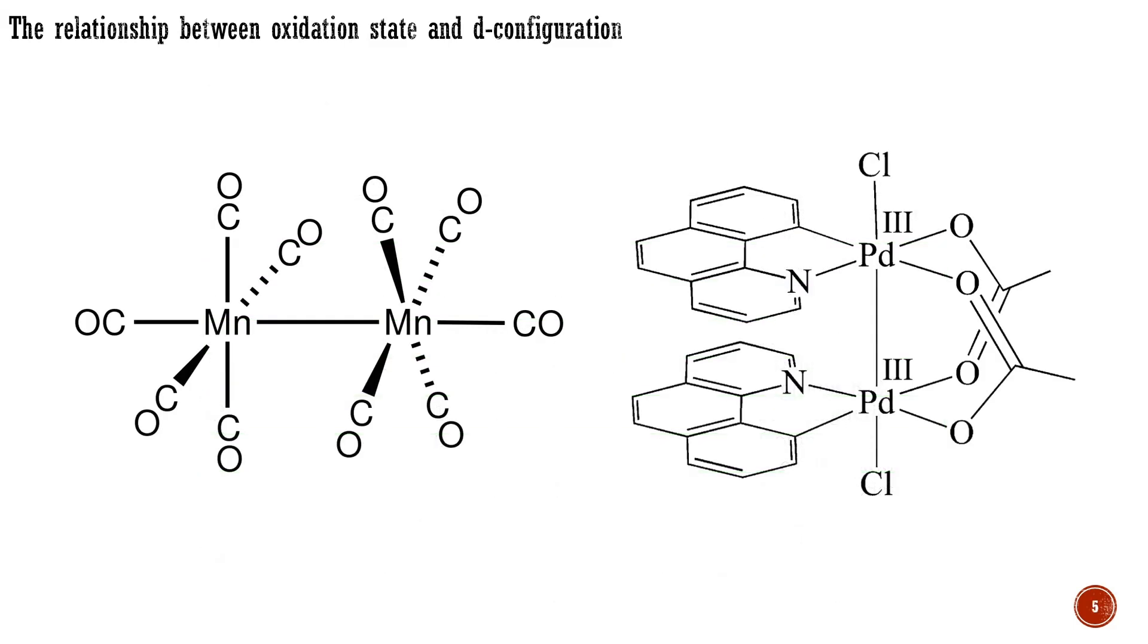Diamagnetic complexes are easier to study and so are more often reported. An exception exists for metal-metal bonded compounds, where odd electrons on each metal can pair up in the metal-metal bond. For example, you can recall dimanganese decacarbonyl mentioned earlier. Another good example is the recently reported d7-palladium-3-dimer complex, which demonstrates intriguing catalytic activity.